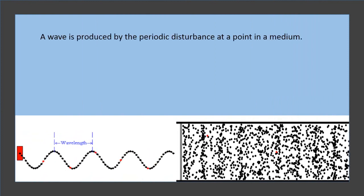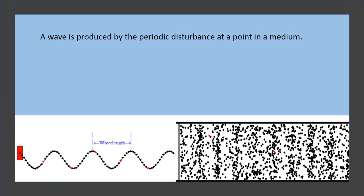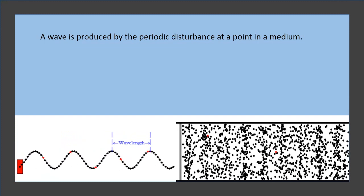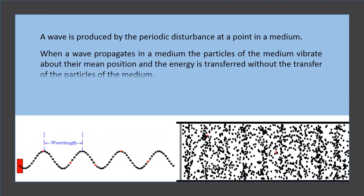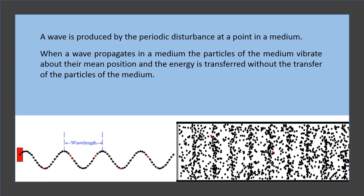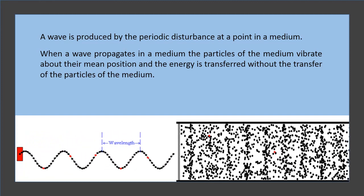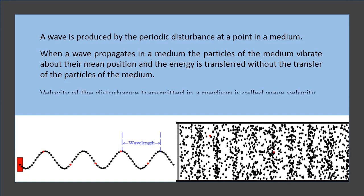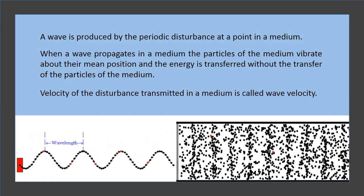Facts about wave motion: A wave motion is produced by the periodic disturbance at a point in a medium. When a wave propagates in a medium, the particles of the medium vibrate about their mean position and the energy is transferred without the transfer of the particles of the medium. The velocity of the disturbance transmitted in a medium is called wave velocity.